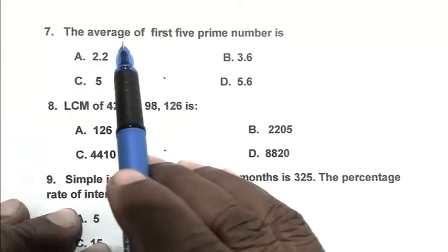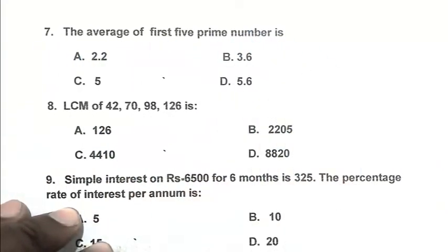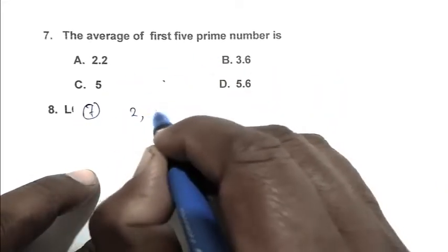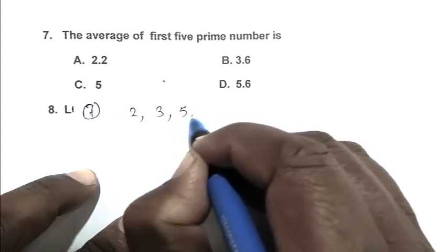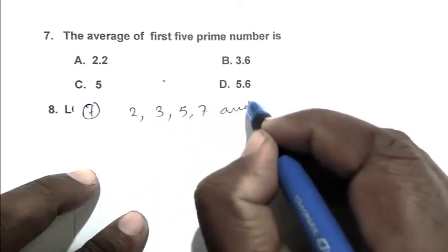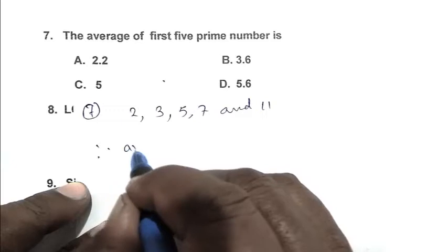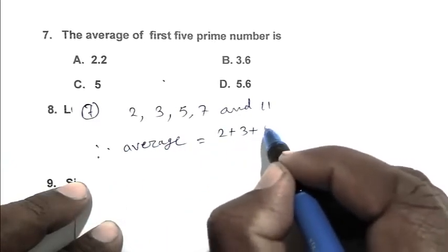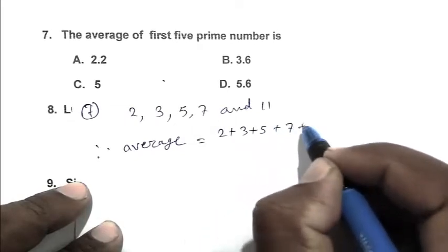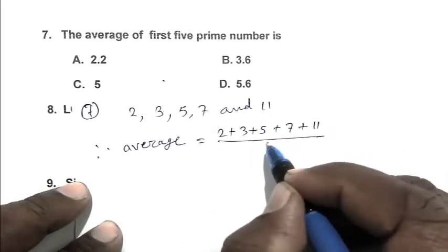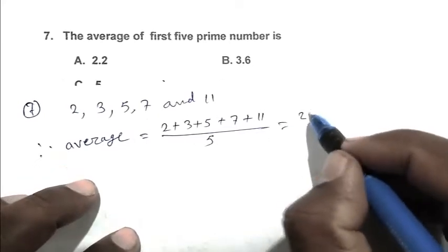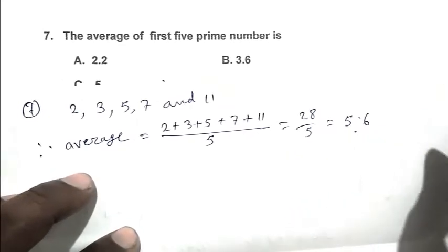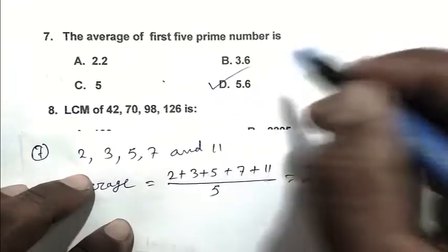Question number 7, the average of first 5 prime numbers. First 5 prime numbers are 2, 3, 5, 7 and 11. Therefore, average equals 2 plus 3 plus 5 plus 7 plus 11 divided by 5. That is 28 by 5 or 5.6. So, D is the right answer.